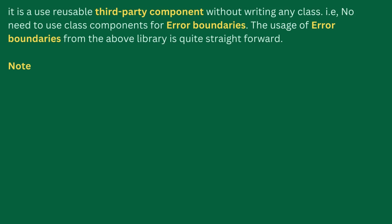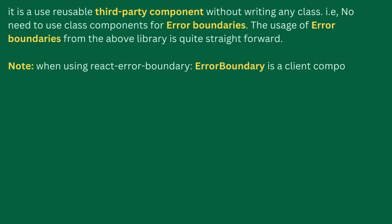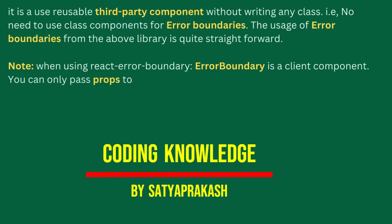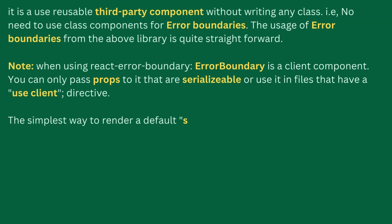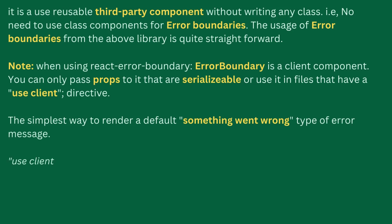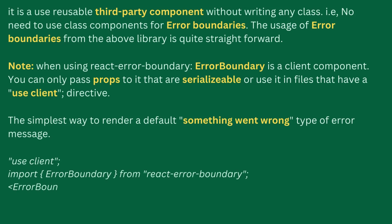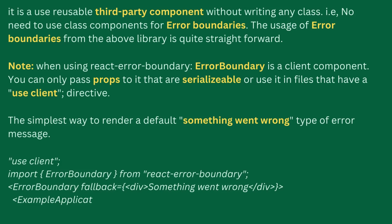Note when using React Error Boundary: Error Boundary is a client component. You can only pass props to it that are serializable, or use it in files that have a use client directive. Error Boundary with Fallback Prop — wrap an Error Boundary component around other React components to catch errors and render a fallback UI. The component supports several ways to render a fallback, the simplest being a default 'something went wrong' error message. In the React code, we import Error Boundary from the React Error Boundary library, then using Error Boundary, mention the valid error message or exceptions in a DIV tag, which will be rendered to the application file component.